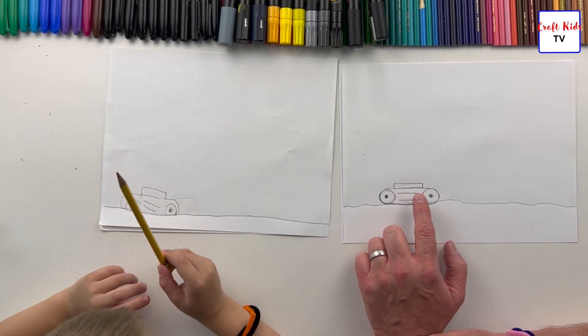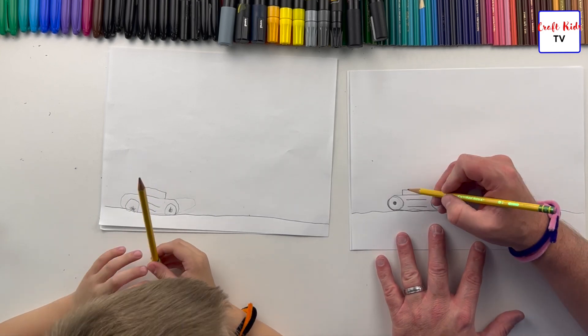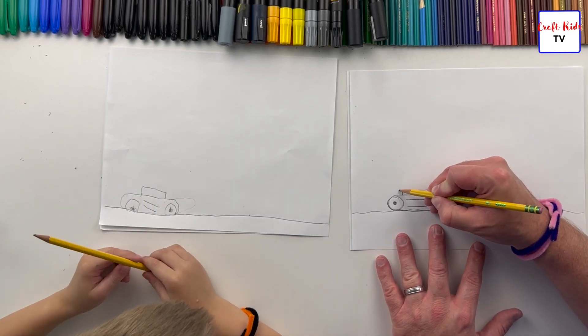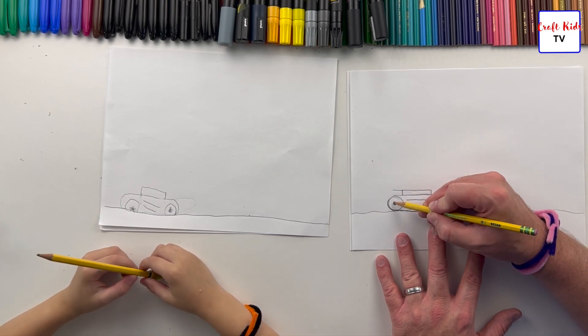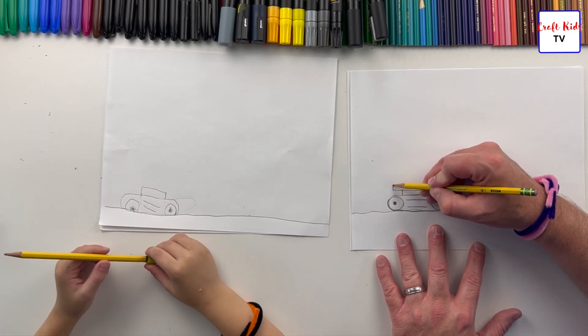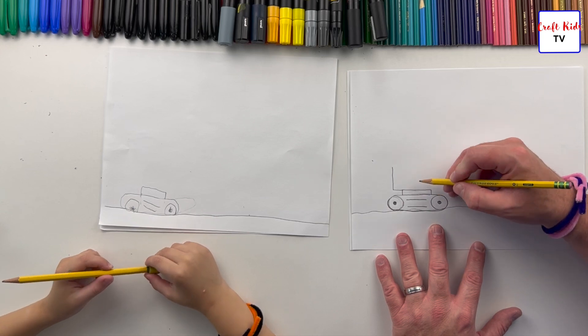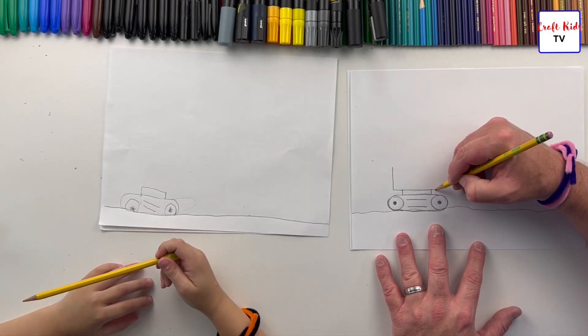So on top of this rectangle that we just made, this long skinny rectangle, we're going to put another rectangle. It's going to go right over the middle of this wheel straight up, and then it's going to go out over the middle of this wheel straight up, and then you're just going to connect them on top.